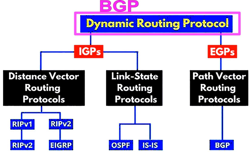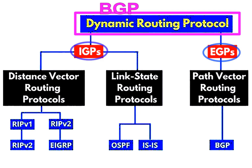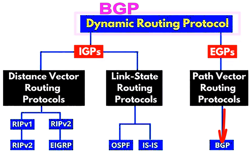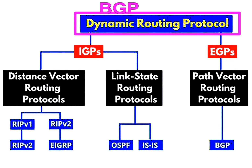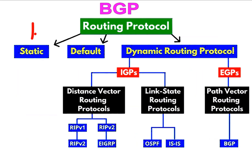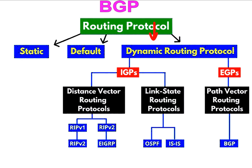Dynamic routing protocols are divided into two parts: IGP and EGP. The BGP protocol we are discussing today falls under EGP protocols, and it is called the path vector routing protocol. Inside dynamic routing, there are two types of protocols: IGP and EGP.